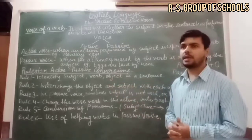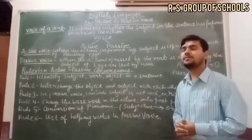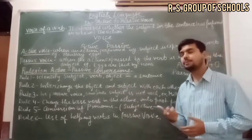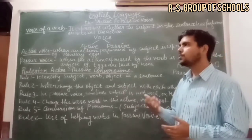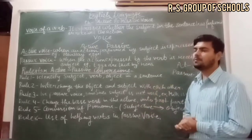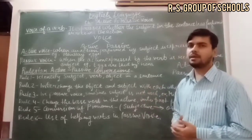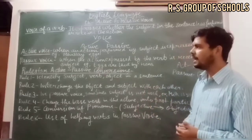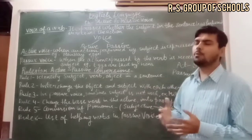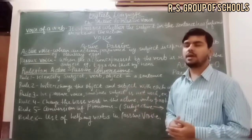For example: 'She is plucking a flower.' Here 'she' is the subject, 'is' is the helping verb, 'plucking' is the main verb, and 'a flower' is the object. When converted to passive voice: 'A flower is being plucked by her' — because 'she' changes to 'her' in objective form.